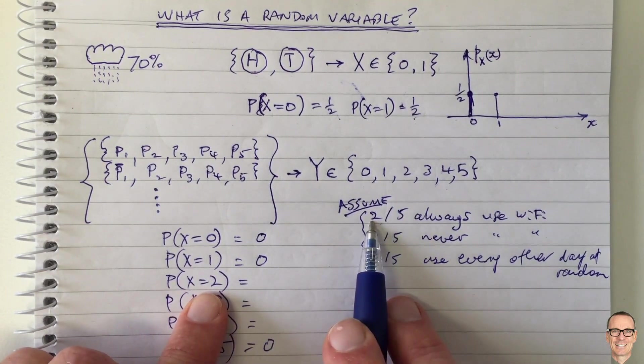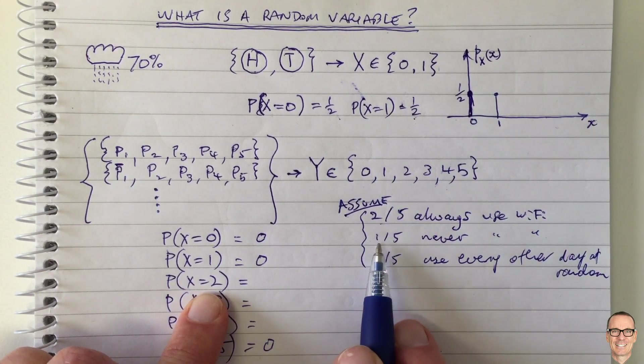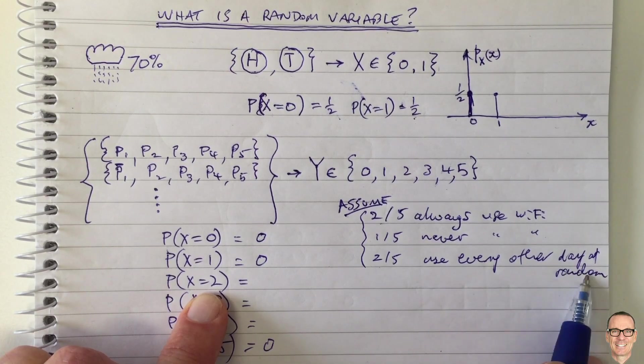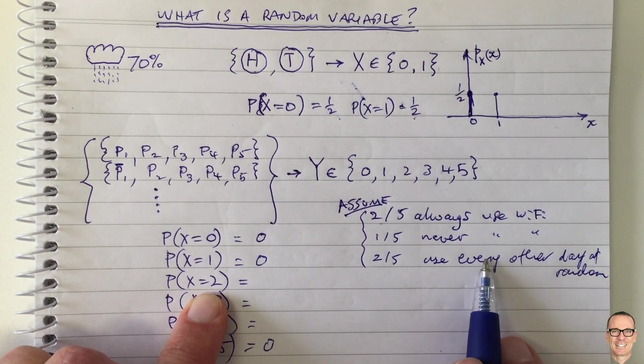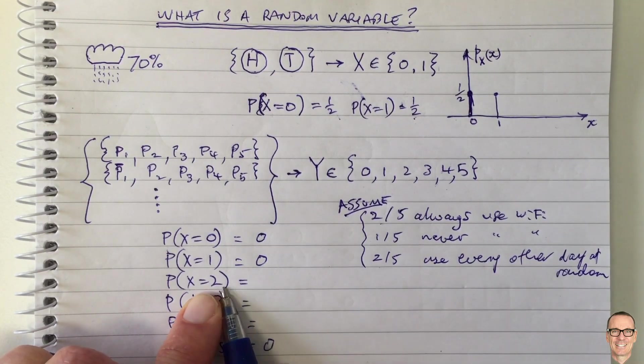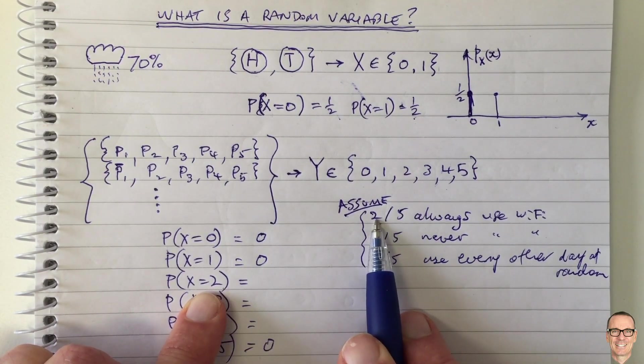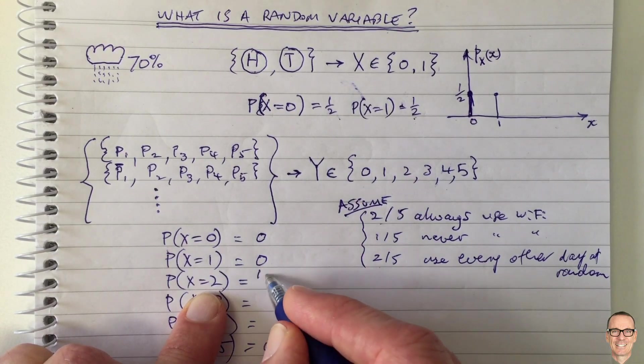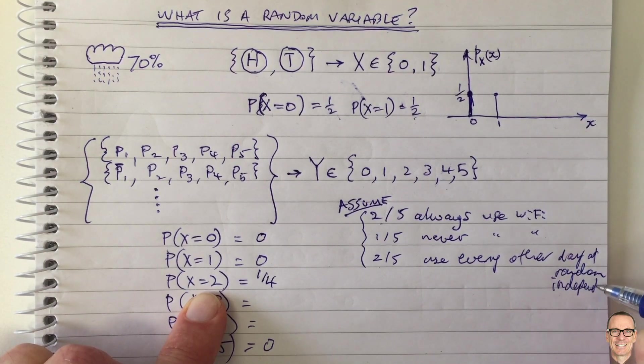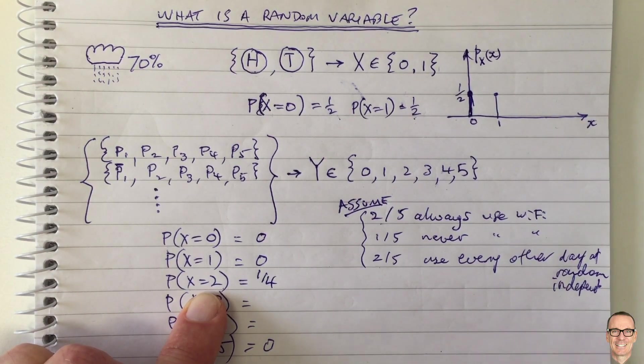So when will there be two? Well, there'll be two if these two are using it and these two are not using it. These two who use it half the time, if they're both not using it and it's sort of every other day at random, then there's half a chance they will be. And if they've both got to not be using it, if it's only these two, then it's a half times a half. So that probability equals a quarter, assuming they're at random and independent, I should write here.